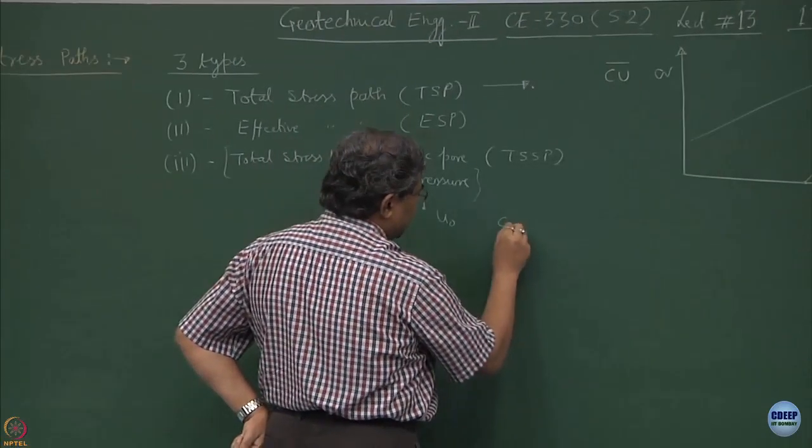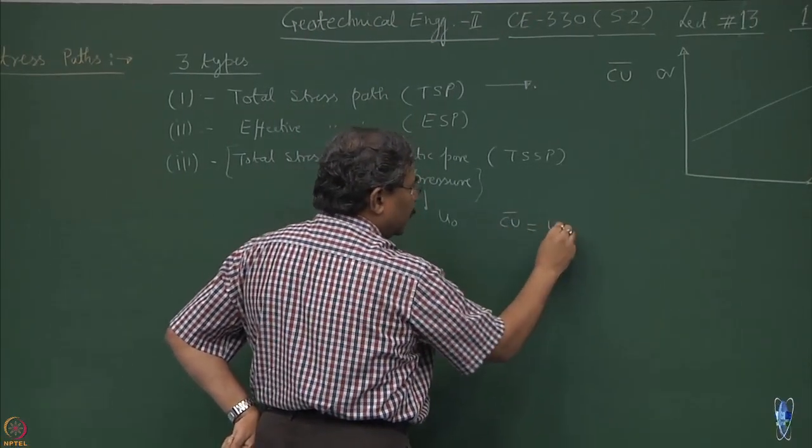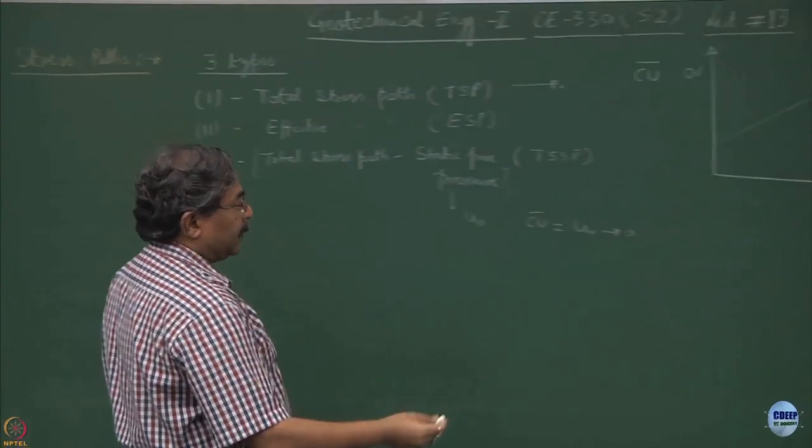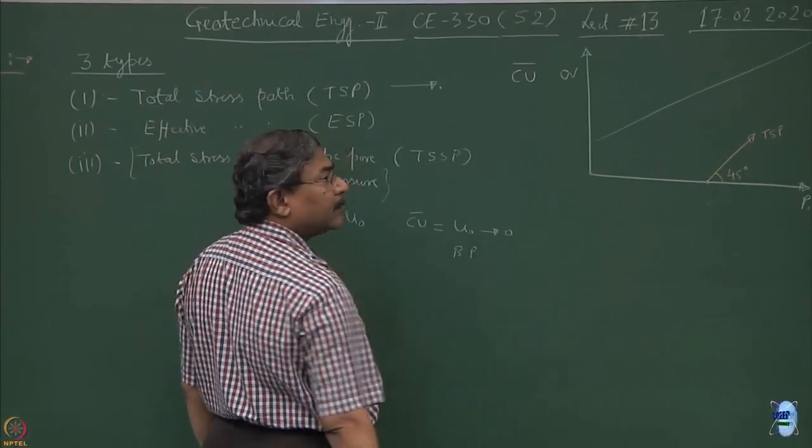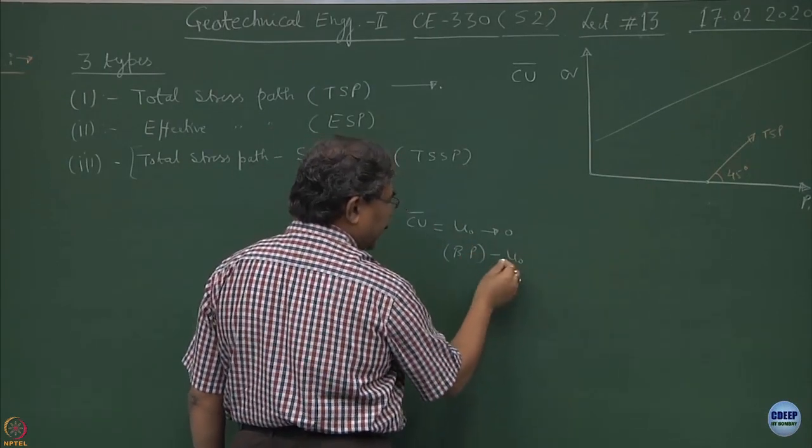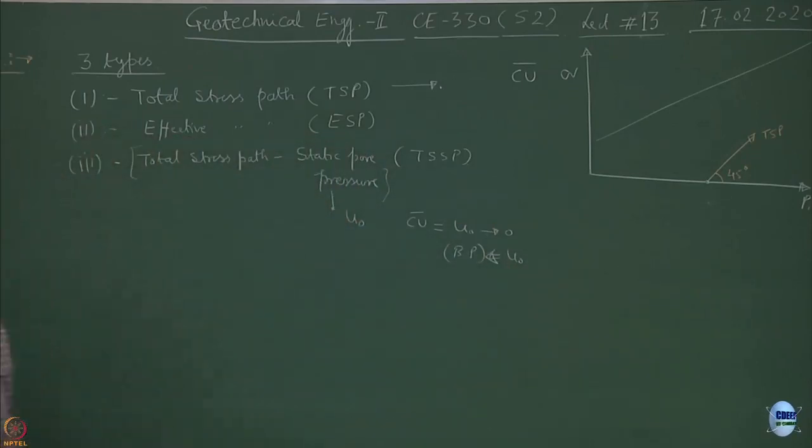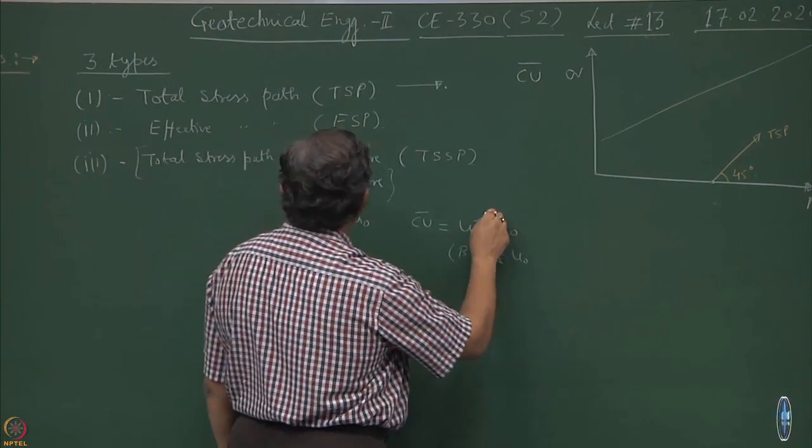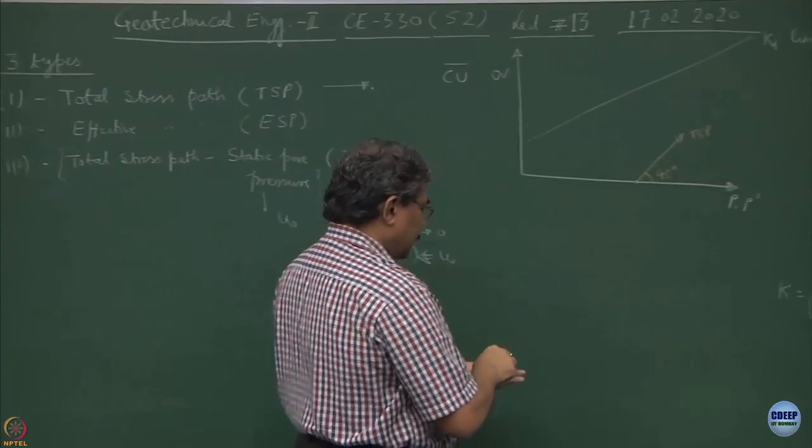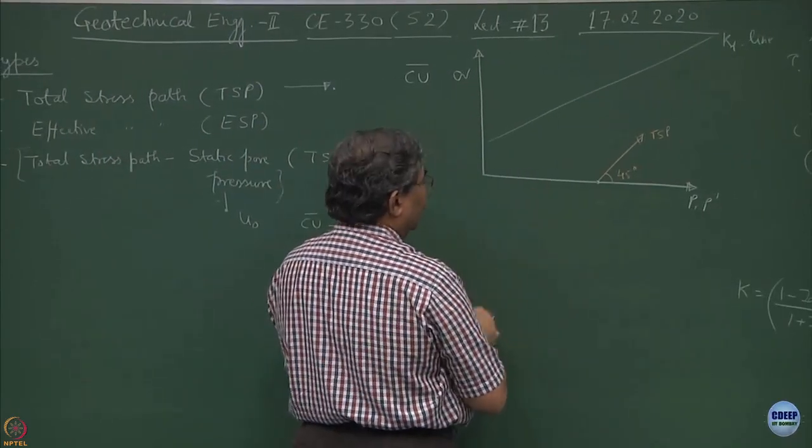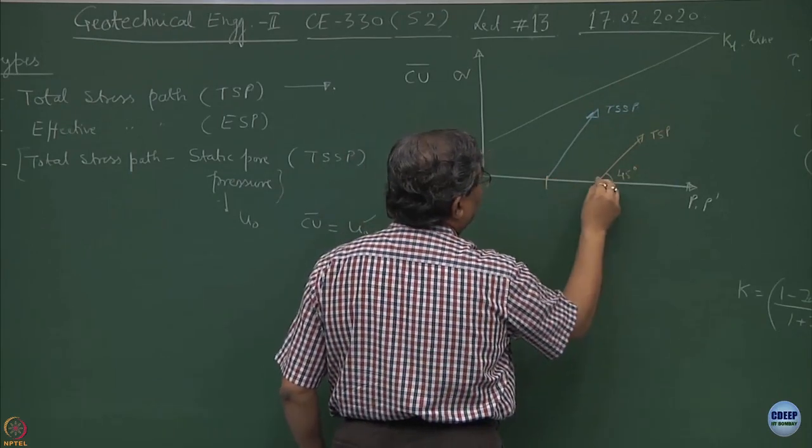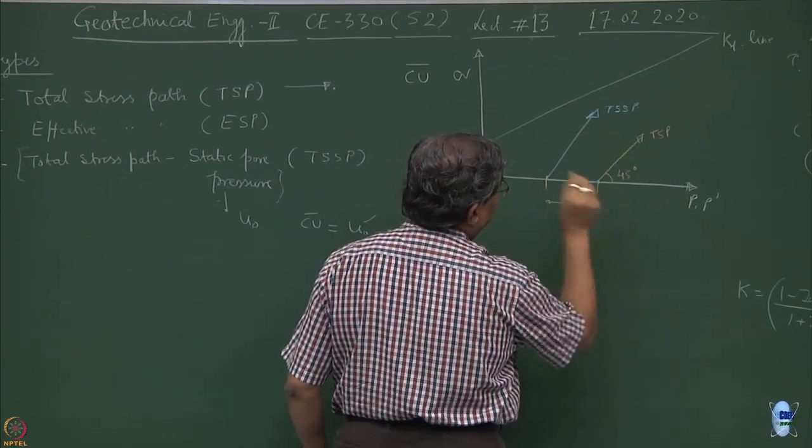What I have written is TSSP equal to total stress path minus static pore pressure. Static pore pressure is normally defined as U0. When you are doing a consolidation test, say CU prime test, during consolidation U0 becomes zero. There could be a situation where you are applying back pressure, so during application of back pressure the value of U0 will equal the back pressure you are applying. There could be a situation taking the sample from ground with a water table, so because of standing water table there will be pore water pressure which we have computed. That will be the value of U0, the static pore pressure. In other words, TSP would get shifted to TSSP and the difference between these two would be U0 value.